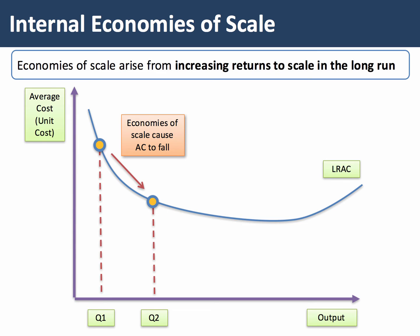So an internal economies of scale — just to remind you — it comes from increasing returns to scale in the long run, and it means that as a firm's output increases, in this case from Q1 to Q2, scaling up production, the unit cost — the average cost per unit — falls, and that is called economies of scale.